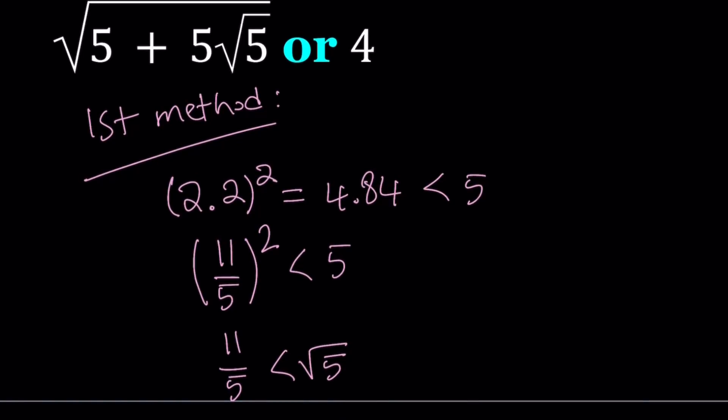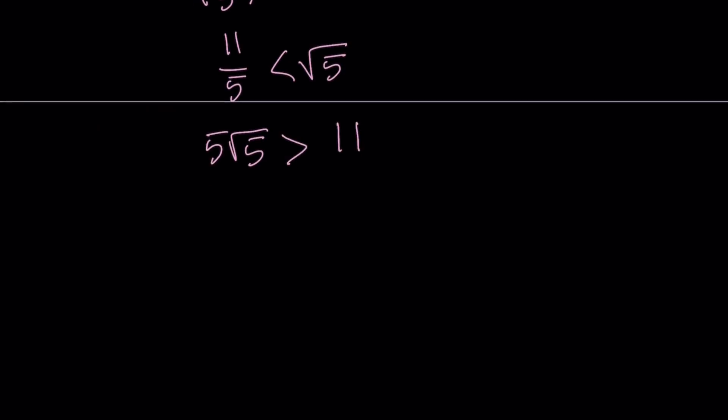But don't worry, we can add 5 to both sides and that's going to be fairly easy. If you add 5 to both sides of this equation, you're going to get that 5 plus 5 root 5 is greater than 16. Notice that we didn't use a calculator, but we just had to use the fact that square root of 5 is 2.2 something, right?